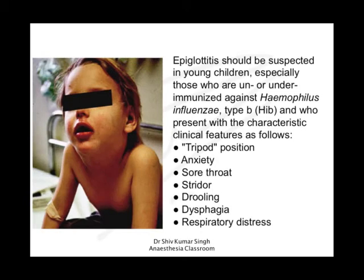Epiglottitis should be suspected in young children, especially those who are unimmunized or under-immunized against Haemophilus influenzae type b, and who present with characteristic clinical features: the tripod position as seen in the image, the child who is very anxious, complaints of sore throat, stridor, drooling of saliva, difficulty in swallowing or dysphagia, and respiratory distress.